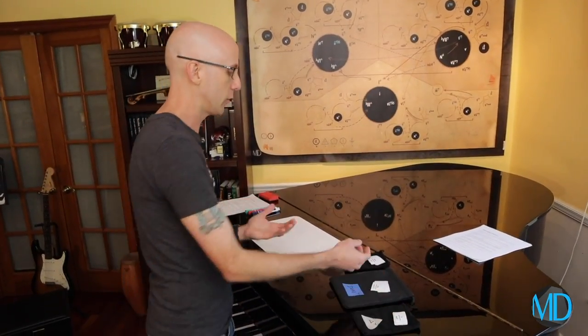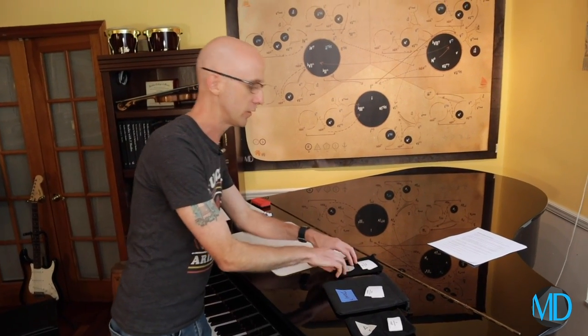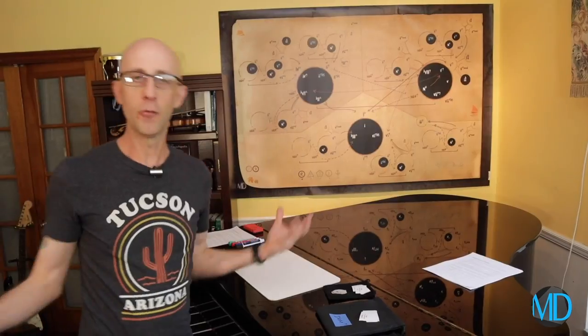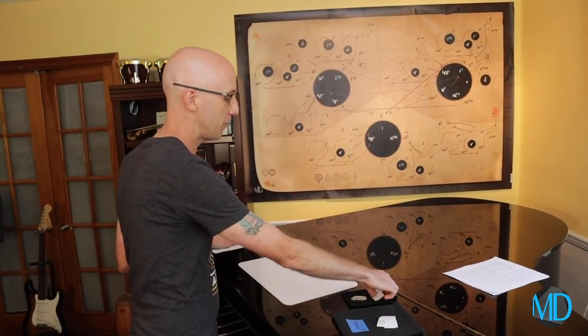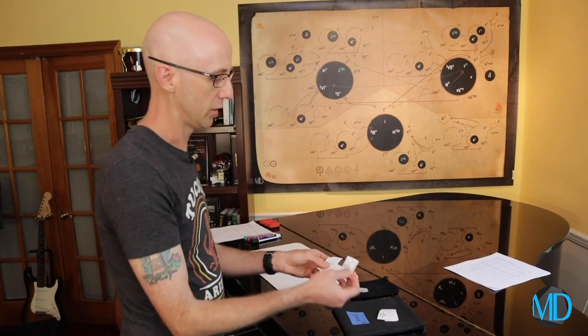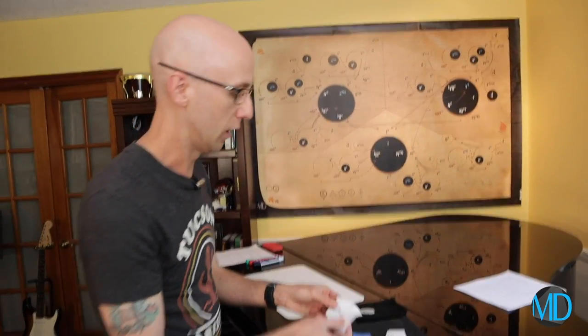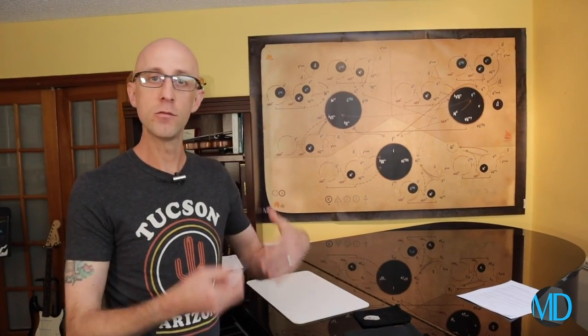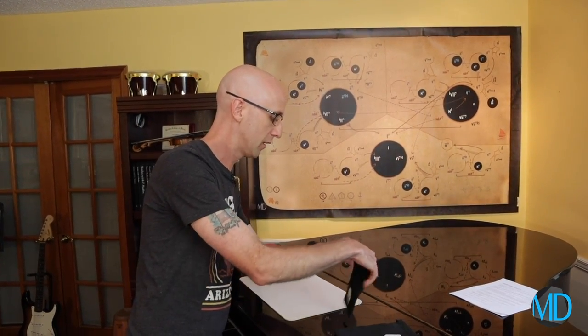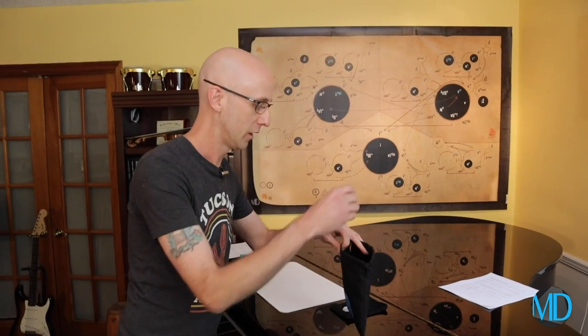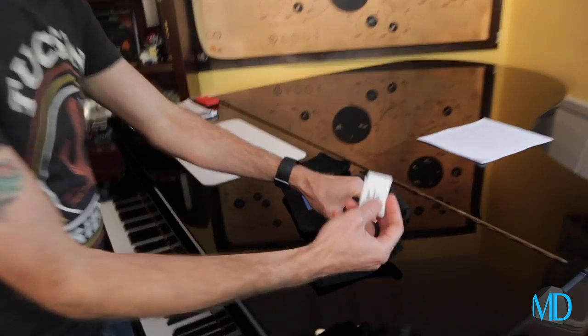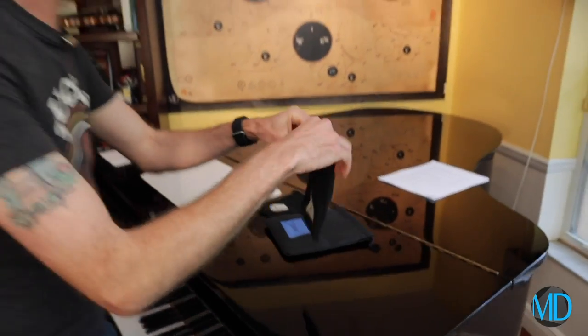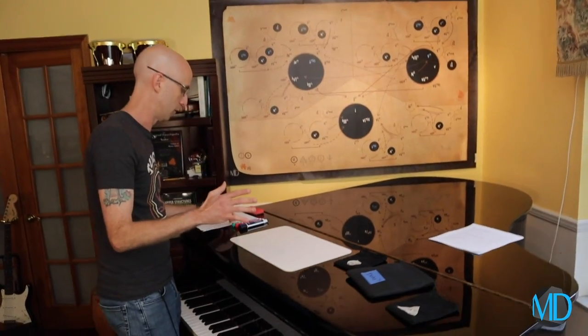We're going to throw these upper structures into the corresponding bags and pull them out at random later to show you how we can apply these upper structures to these three chords. On the minor seven flat five bag, I've got five separate options from five episodes. We'll throw those in, mix them up, along with my 11 upper structures for dominant seven chords and four for major seven chords. Let's break this down on our board.